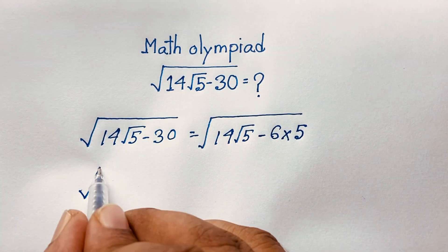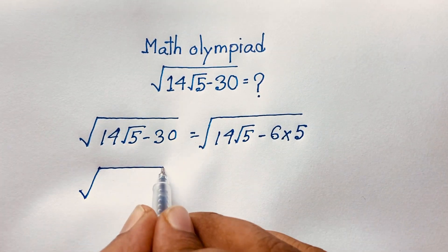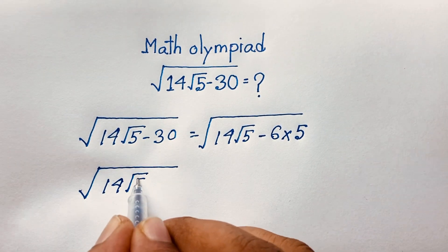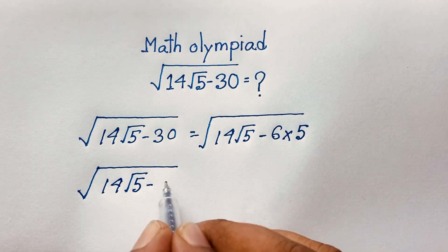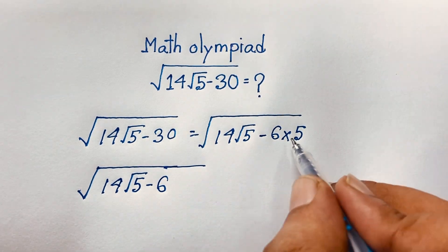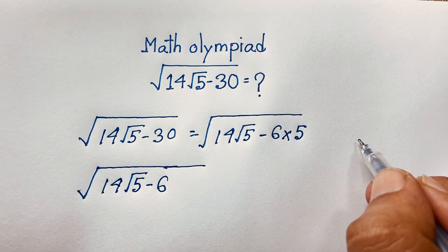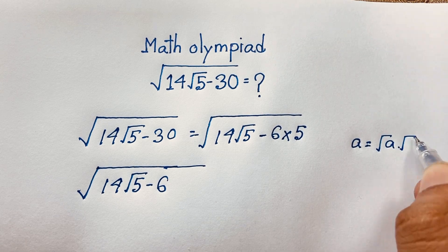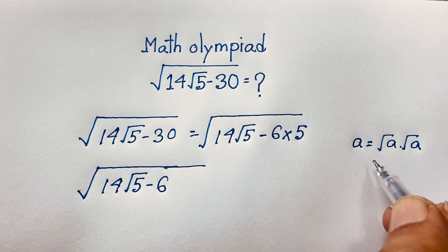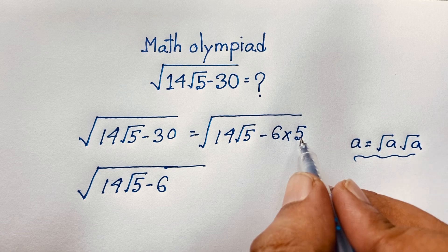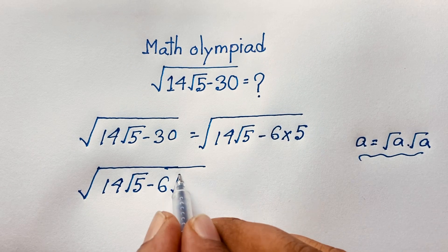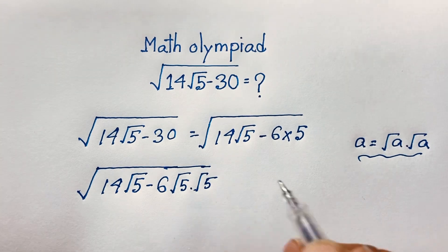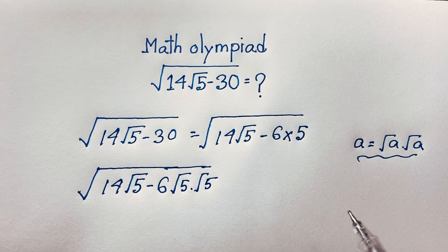So the expression becomes: square root of (14√5 minus 6 times 5). Note that √a times √a equals a. Applying this, the 5 inside becomes √5 times √5.